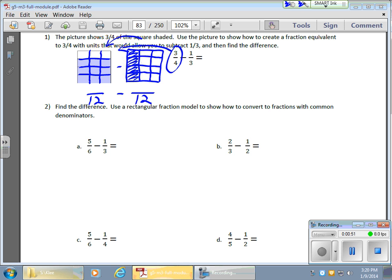And what I'm doing here is creating equivalent fractions. So I now have 9 twelfths over here, and 9 twelfths is equivalent to that 3 quarters that I started with. And over here I notice I have 4 twelfths, which is also equivalent to my 1 third.